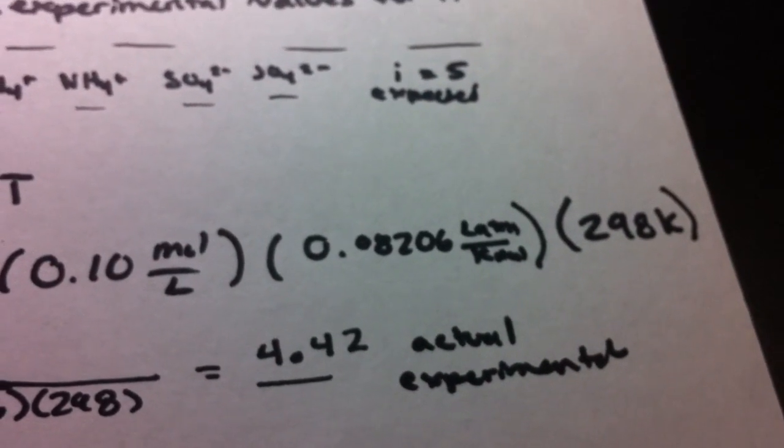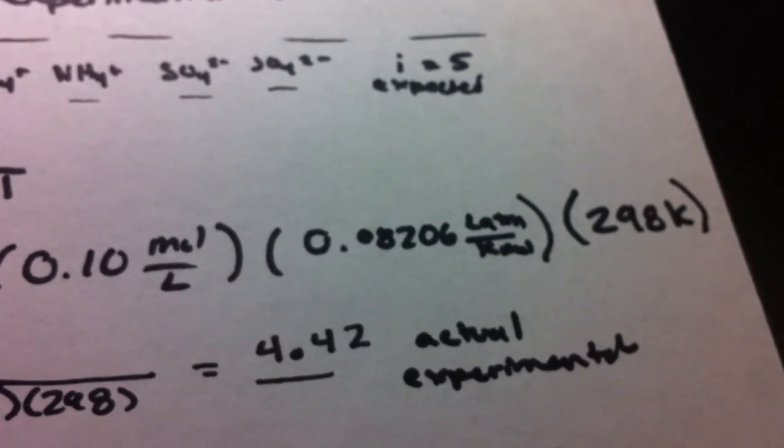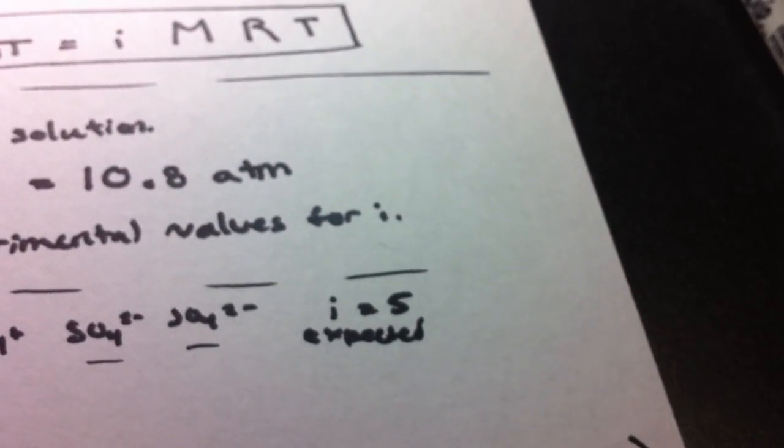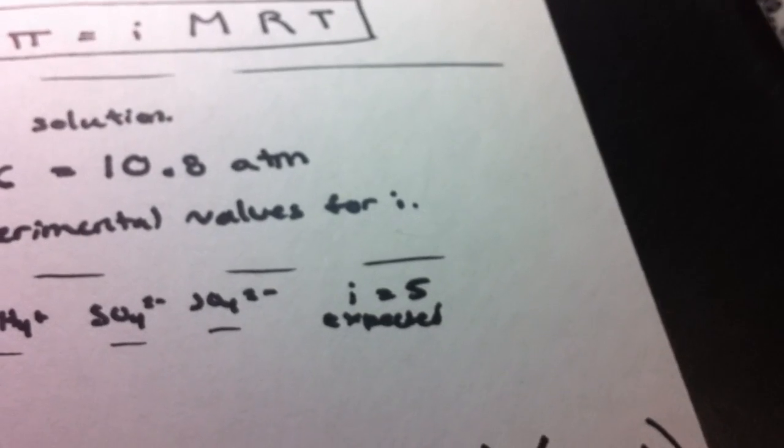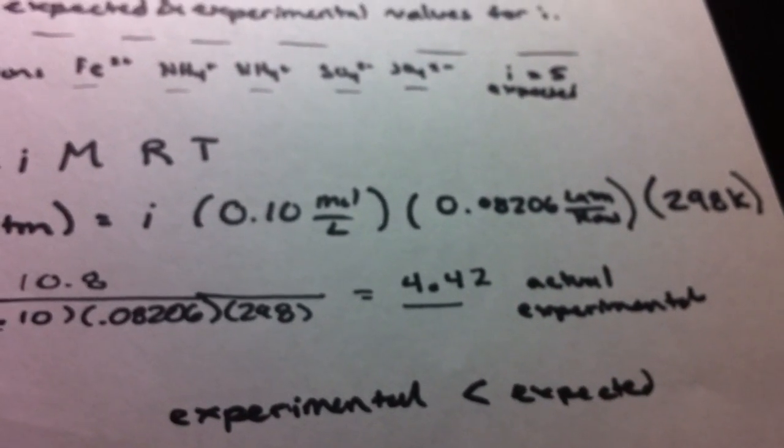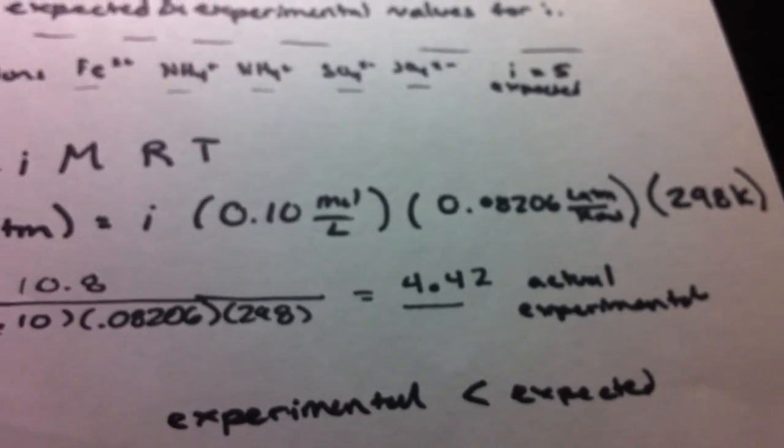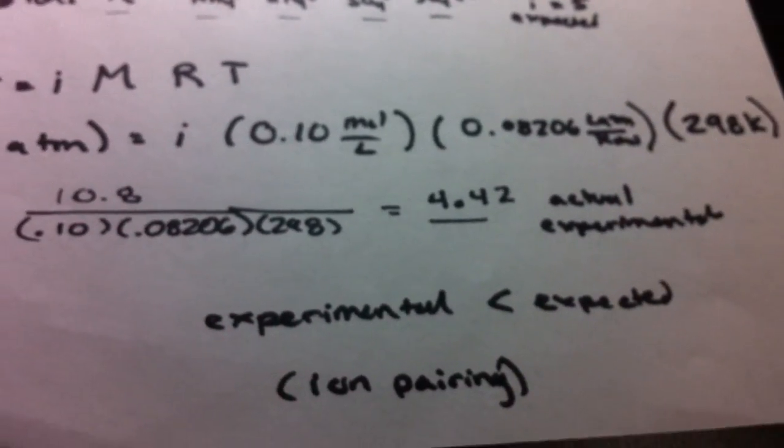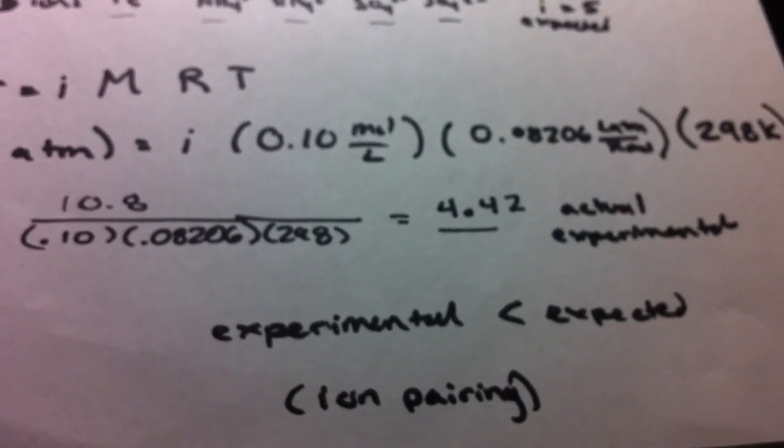That's going to be the i for our actual experimental data. The expected data for i was 5. So as you can see, experimental was lower than expected. And this is partly due to ion pairing.